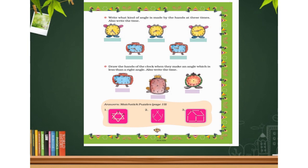As you can see in the first one, the angle is less than 90 degrees. In the second one, one hand is at 3 and another hand is at 8, which is more than 90 degrees — so that is an obtuse angle, and the time is 3:40. The rest of the timings and angles you have to do by yourself.